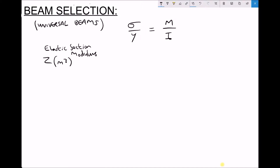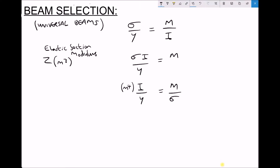Referring to our formula, I'm going to rearrange it. First I'll multiply each side by i, giving sigma i over y equals m. Then dividing each side by sigma gives i over y equals m over sigma. Now i over y is what's known as our elastic section modulus, represented by the letter z. Recall that second moment of area is measured in meters to the fourth and distance from the neutral axis is measured in meters, so cancelling those units gives us meters cubed. Therefore i over y equals z, with units of meters cubed.